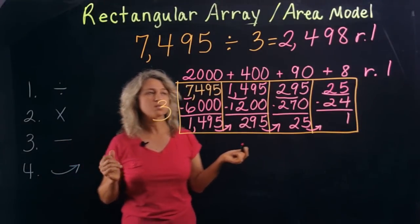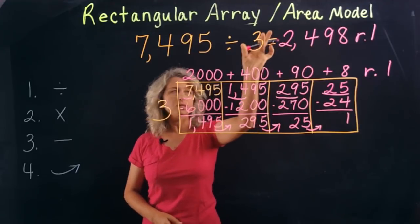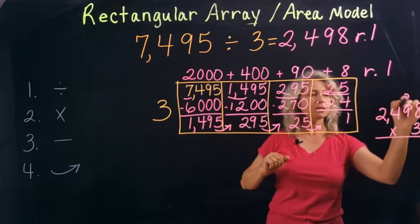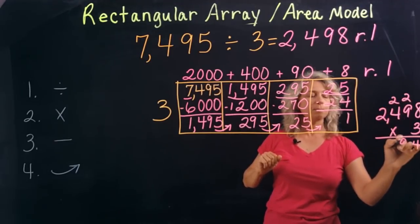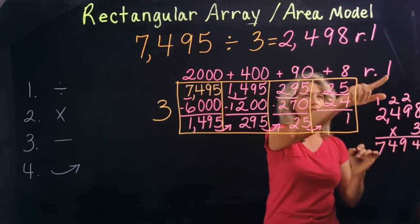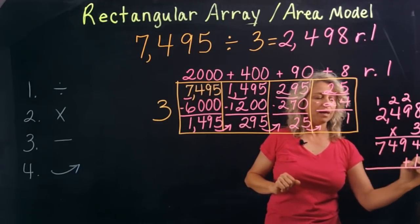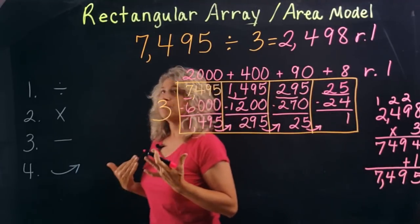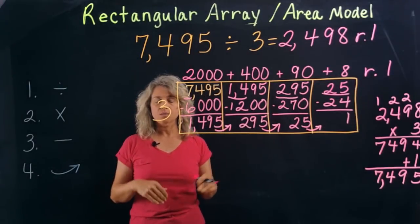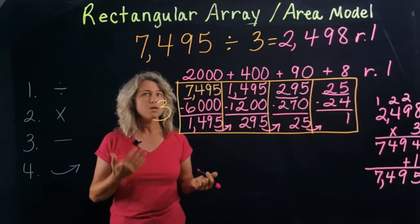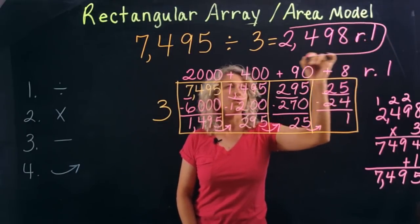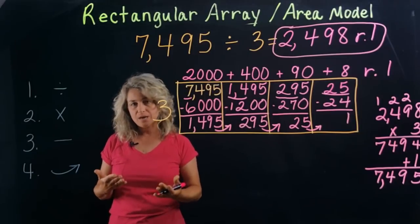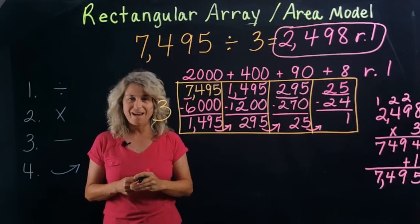Always check your work to make sure it's correct — multiply your quotient times the divisor: 2,498 times 3. 3 times 8 is 24, carry the 2... and don't forget to add in the remainder. Do our numbers match? They do! We know it's correct when our numbers match up, and we know it's a reasonable answer. So our quotient is 2,498 with a remainder of 1. It takes practice, but you can do it — just try several problems and you'll get the hang of it. Thanks for watching!